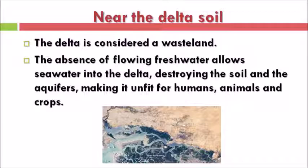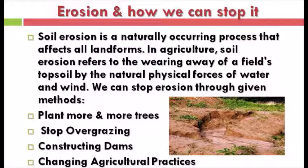Our next point is erosion and how we can stop it. Soil erosion is a naturally occurring process that affects all landforms. In agriculture, soil erosion refers to the wearing away of a field's topsoil by the natural physical forces of water and wind.